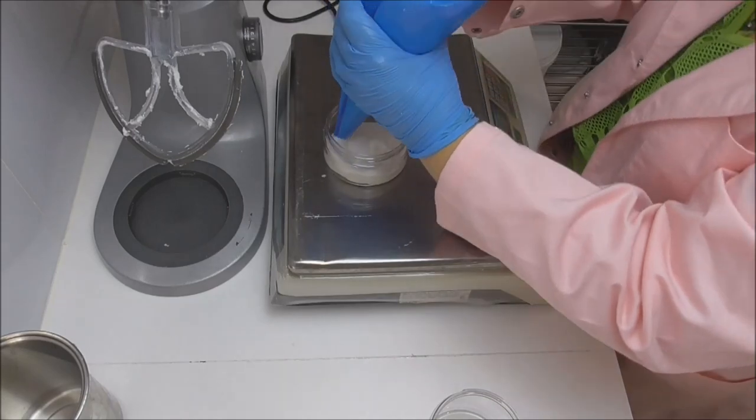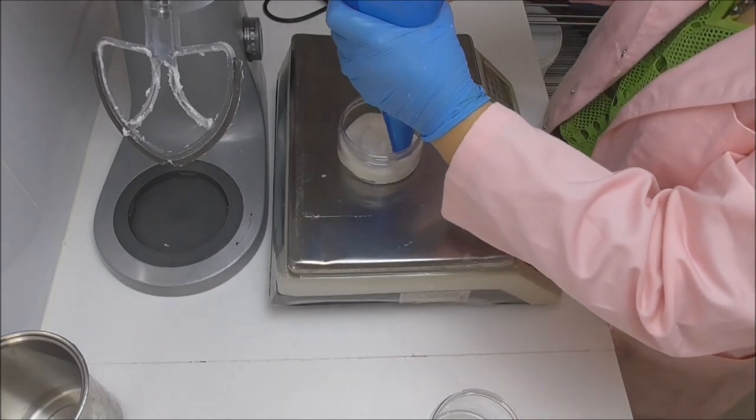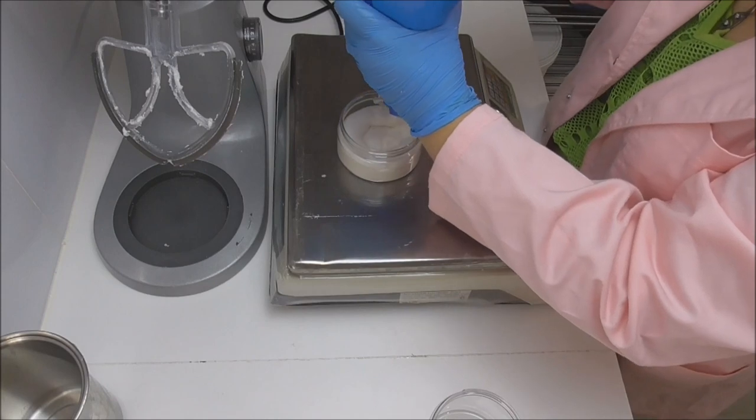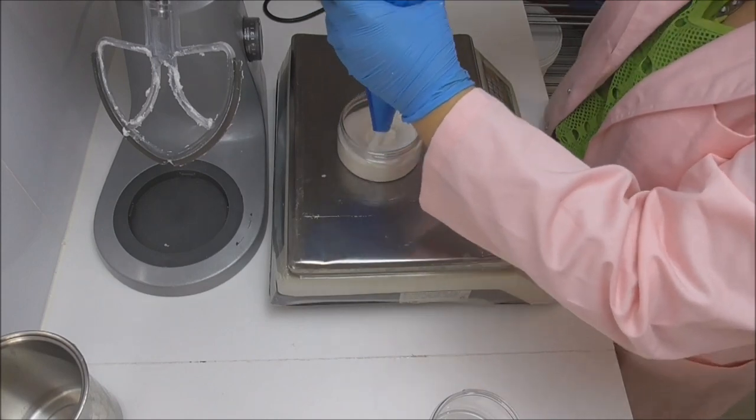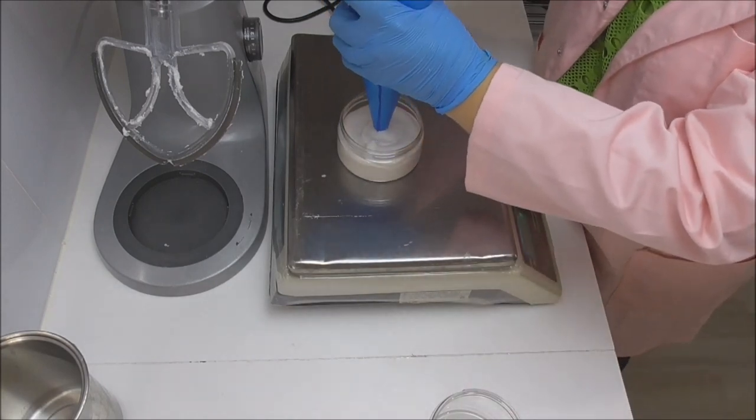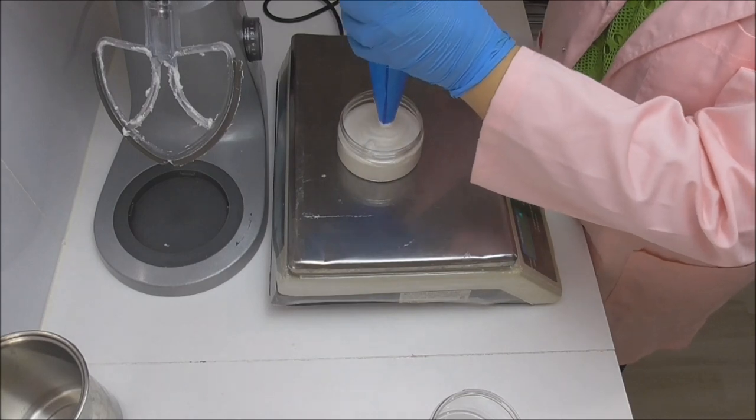I see a lot of people when they make foaming sugar scrubs who pipe it into their containers using one of the really pretty piping tips. So it makes lots of frills as they pipe it in. Now I have tried that in the past.